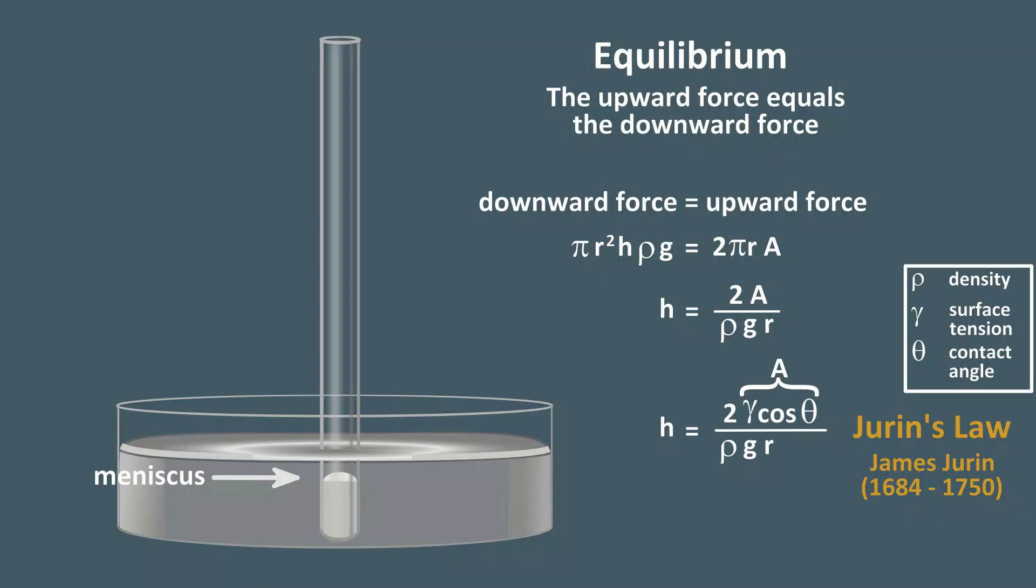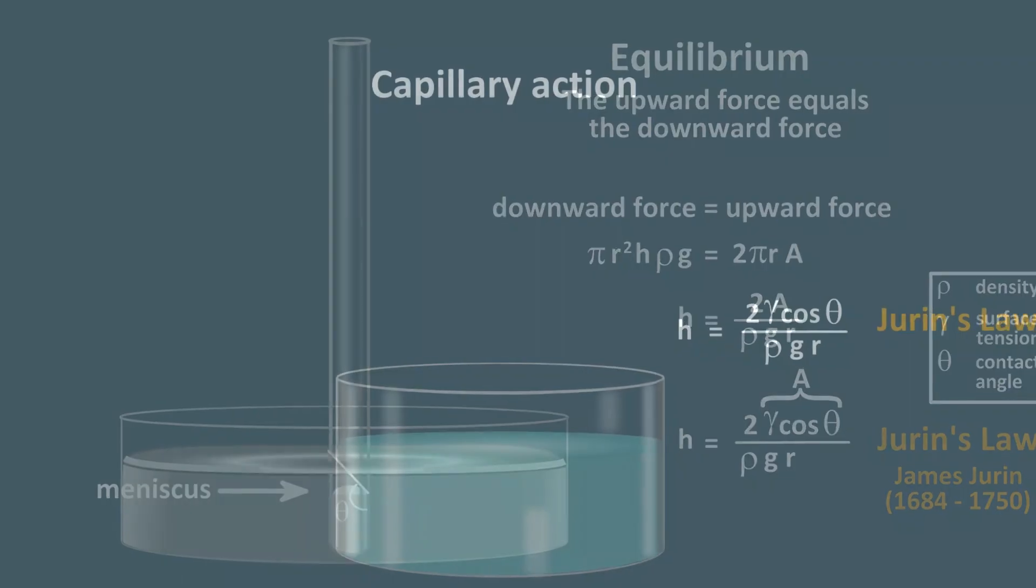This comes about because mercury has no adhesion to the glass. The meniscus is convex, instead of concave, like with water. Mercury has high cohesion. That is, the mercury atoms interact strongly with each other, creating high surface tension. With theta now greater than 90 degrees, cosine theta is negative, making height h a negative value also.